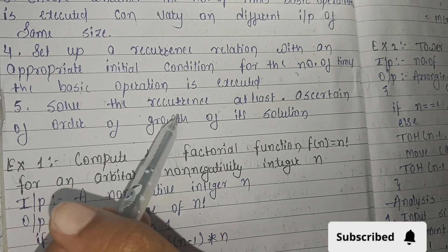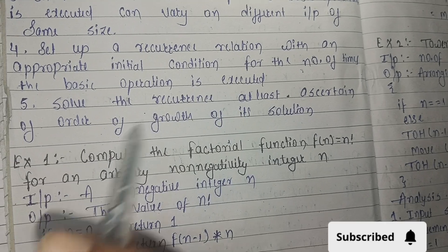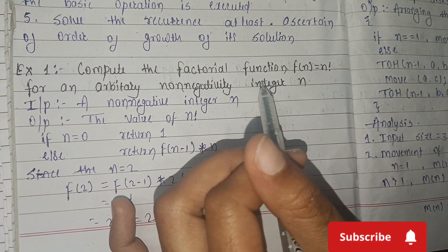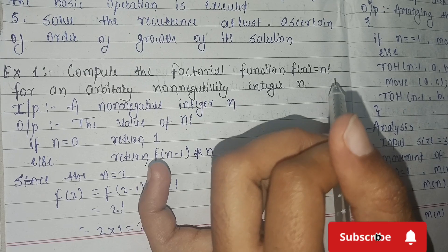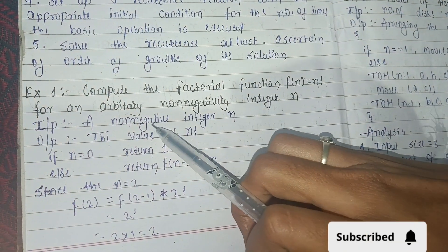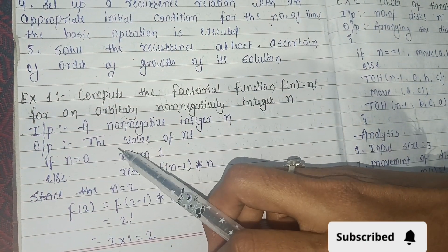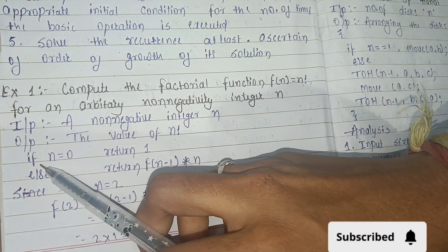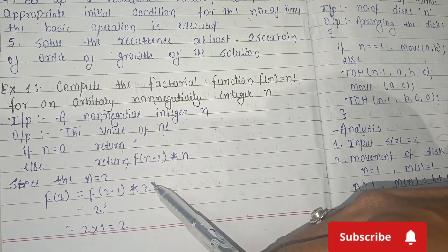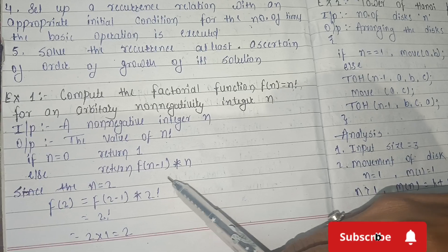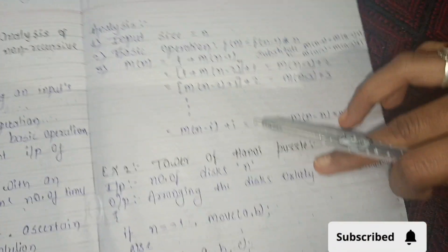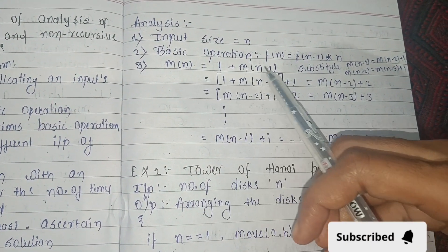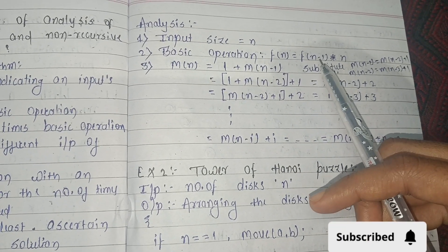Fifth: solve the recursion to determine the order of growth of its solution. Example: compute the factorial function f(n) = n factorial for an arbitrary non-negative integer n. Input is a non-negative integer, output is the value of n factorial. If n equals 0 then return 1, else return f(n-1) times n. Analysis: input size equals n, basic operation is f(n) = f(n-1) times n.